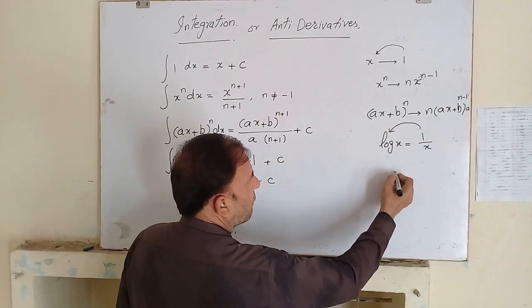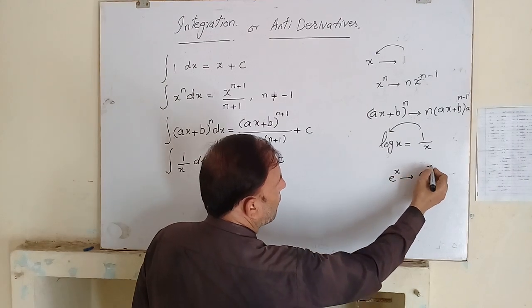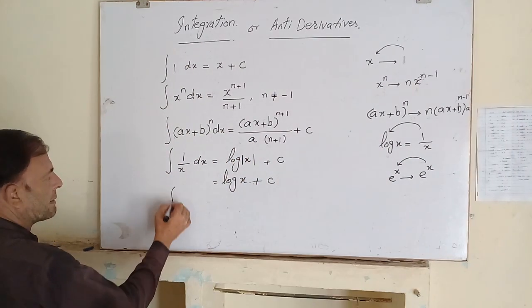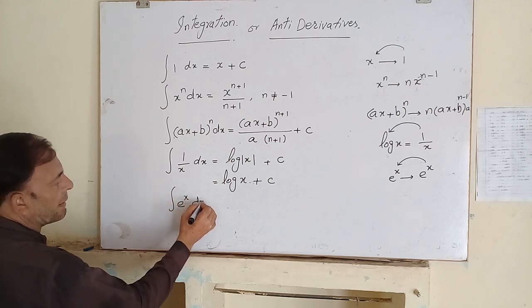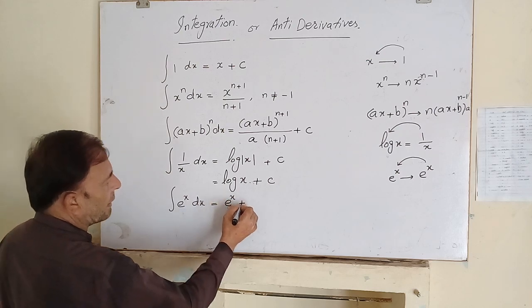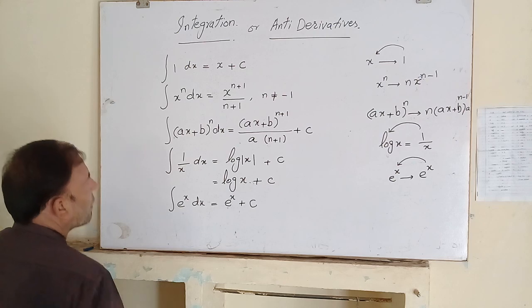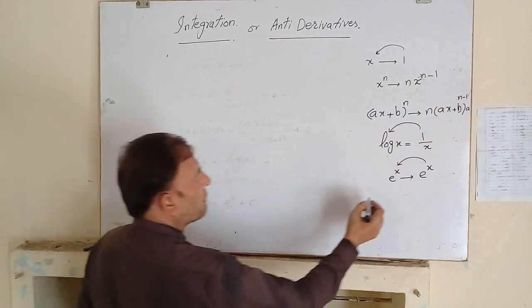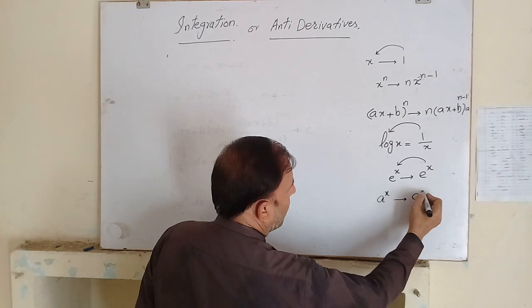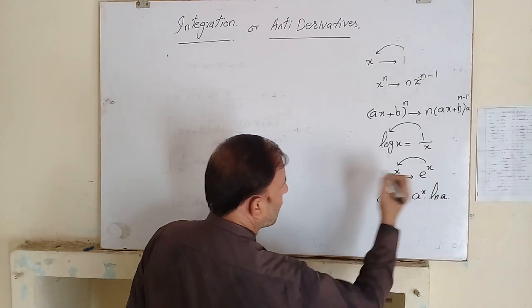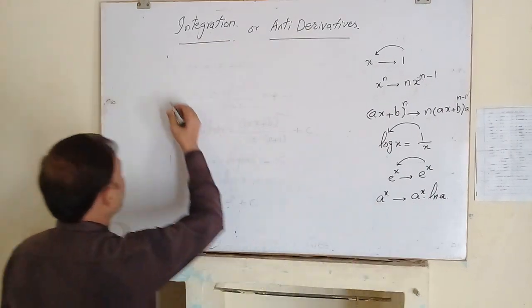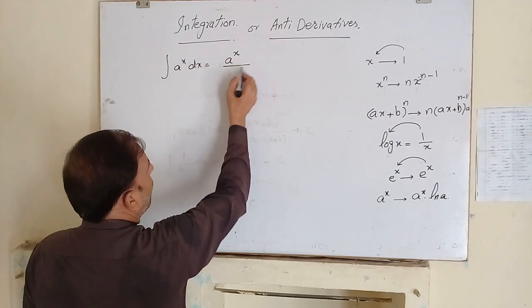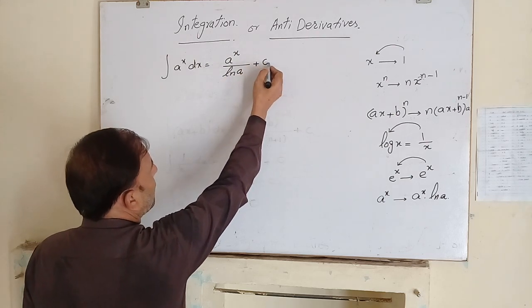We have the derivative of e raised to power x is equal to e raised to power x. So the integration of e to the power x will also be e raised to power x plus c. We also have the derivative of a raised to power x, which is a raised to power x times log of a. So if we integrate a raised to power x, it becomes a raised to power x over log of a, plus the constant of integration.